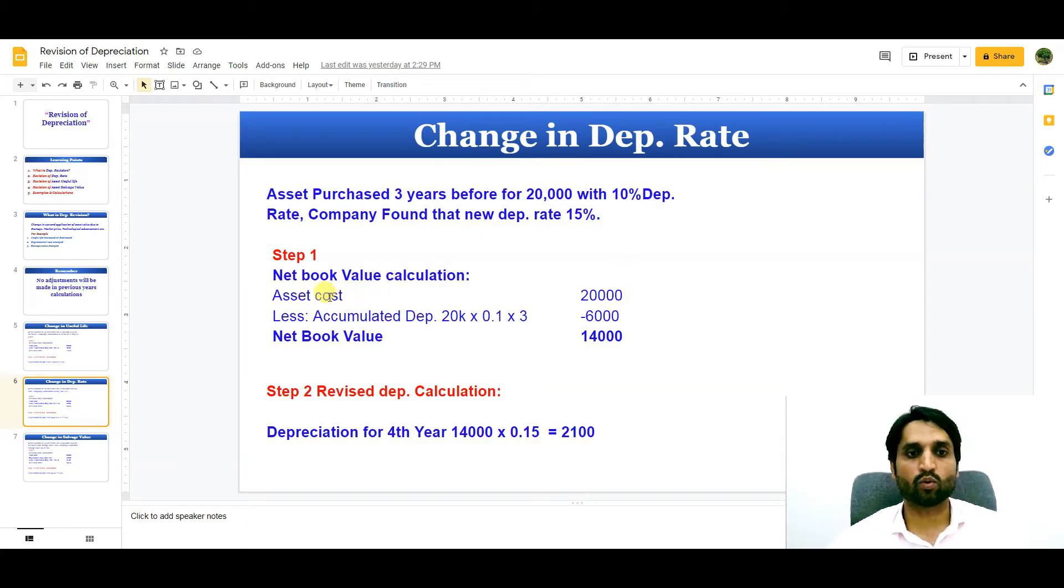Now step one, we need to calculate the book value. Asset cost less accumulated depreciation. Asset cost less accumulated depreciation which was 20,000 multiplied by 10% by 3 years which is 6,000. So the net book value remaining in our books is 14,000. So now this 14,000 will be calculated according to 15% rate depreciation. So depreciation for fourth year will be 14,000 multiplied by 15% is equal to 2,100 will be the fourth year depreciation.